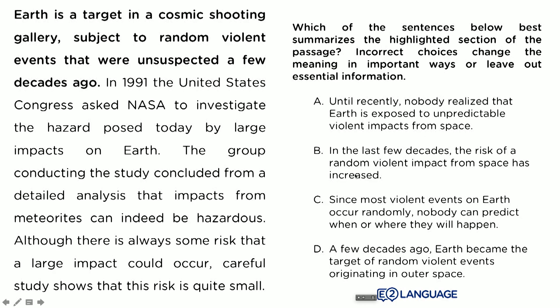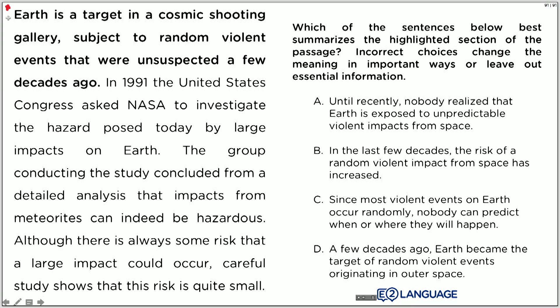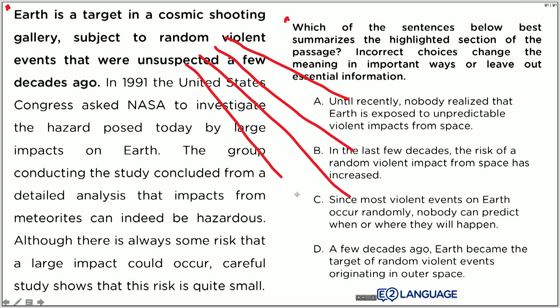The first thing you'll notice about this question type is that the sentence here is in bold text. It says: 'Earth is a target in a cosmic shooting gallery, subject to random violent events that were unsuspected a few decades ago.' The question asks which of the sentences below best summarizes the highlighted section of the passage. One of these sentences says the exact same thing in different words, and three of them will say something slightly different or leave out important information.